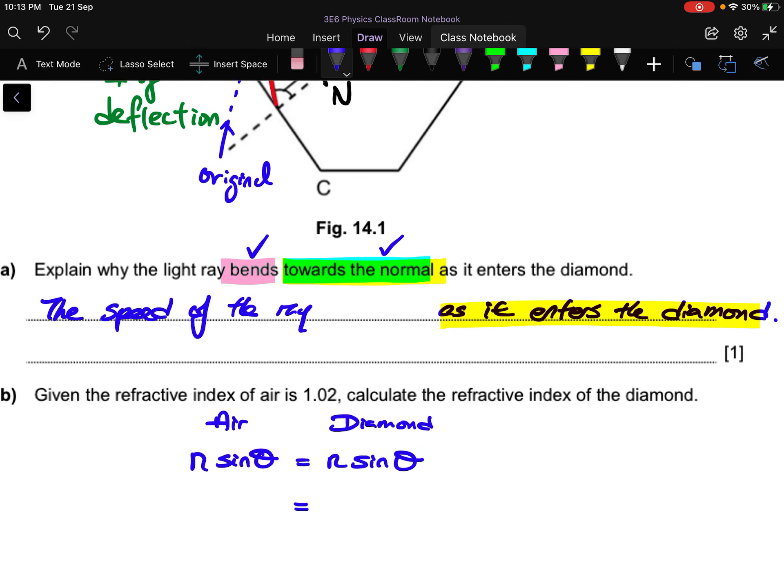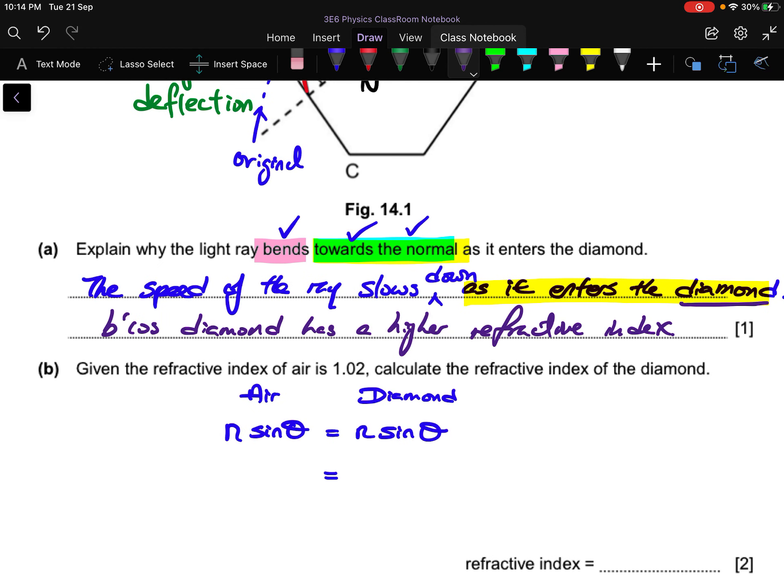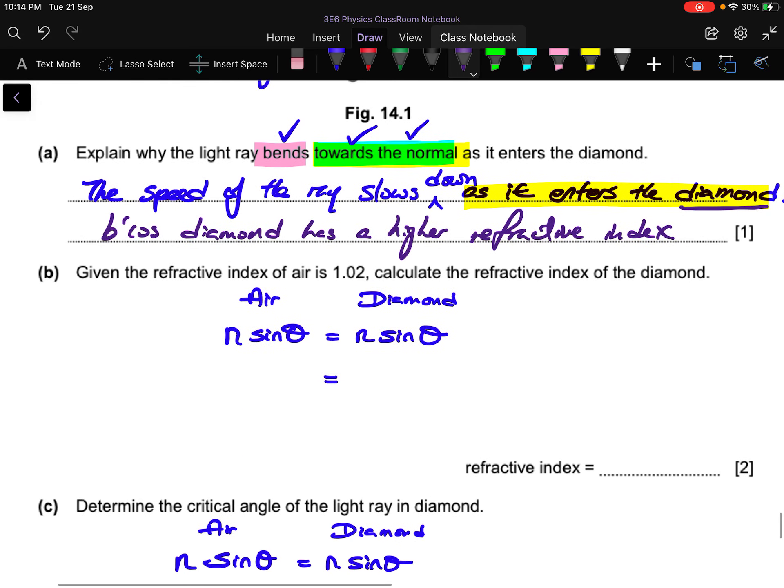So why is it towards the normal? So the speed of the ray didn't change. It drops. Right? It slows down. So by saying that it slows down, it will help you explain why is it towards the normal. But as you can see, there are two answer lines. So they will expect you to give a bit more detail. So maybe you can talk about the property of the diamond because diamond has a higher refractive index maybe. Or you can say that the diamond has a higher density maybe. So just try because you never know what the marker expect from this simple context, this simple question. But since you see two answer lines, just talk a bit more. Okay. But don't overcommit.